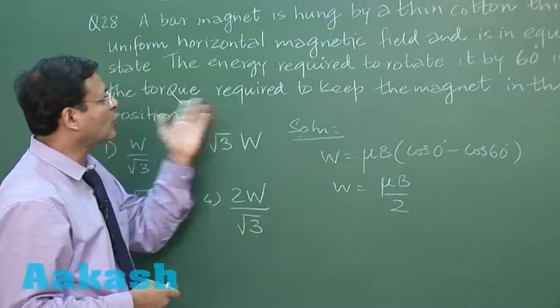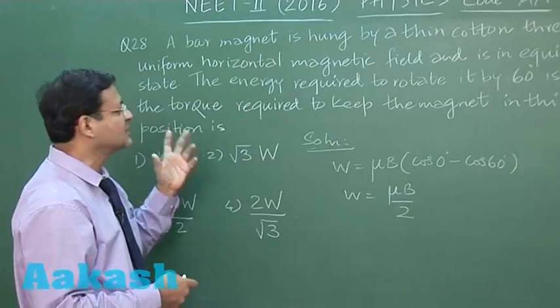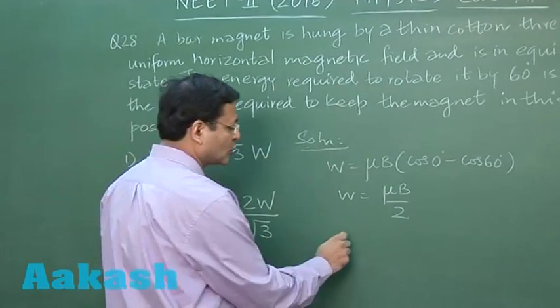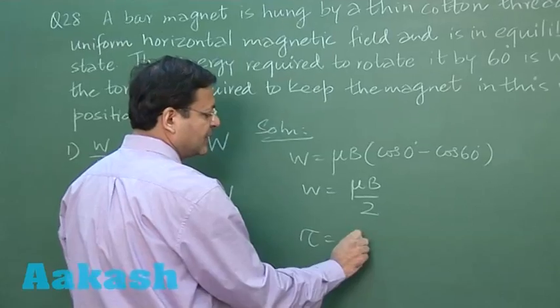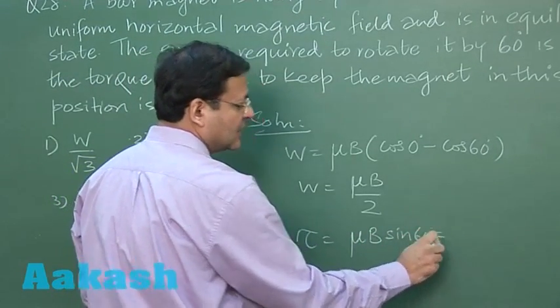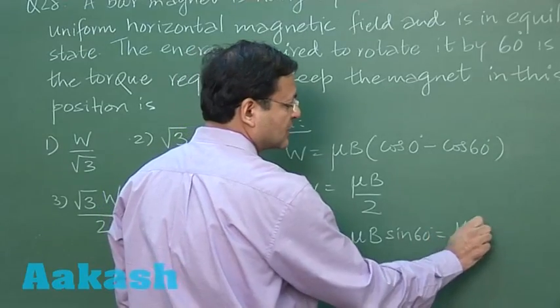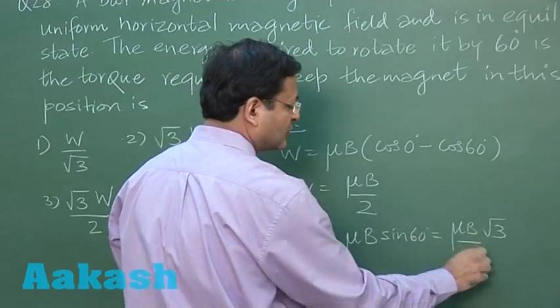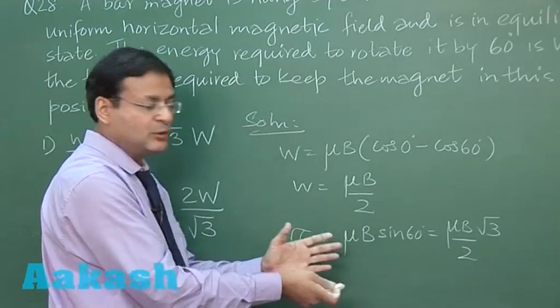Now they're asking the torque required to keep the magnet in this new position, which is 60 degrees. Torque is μB sin 60. Sin 60 degrees is √3/2. So this is μB√3/2.